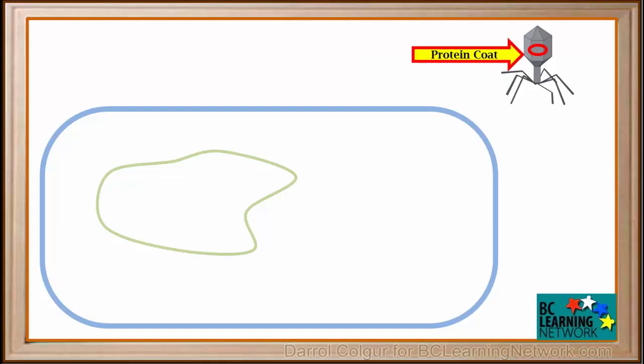The rest of the virus is made up of protein. The protein coat often has a geometrical shape, like this type of virus has.